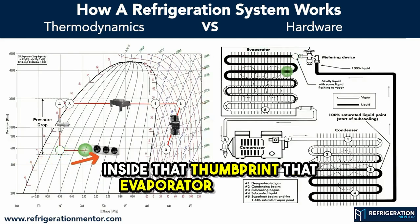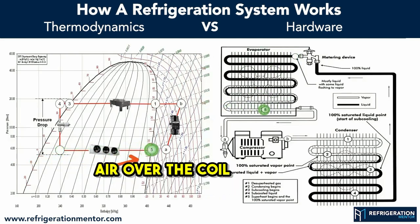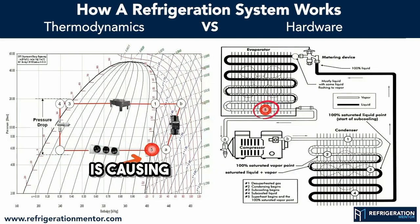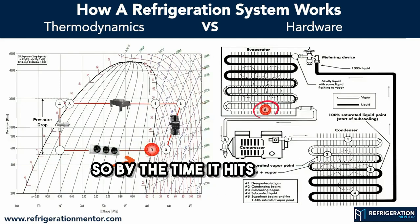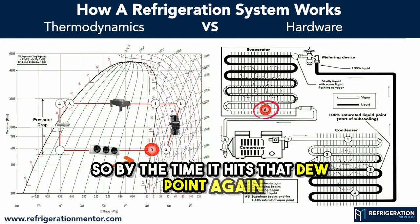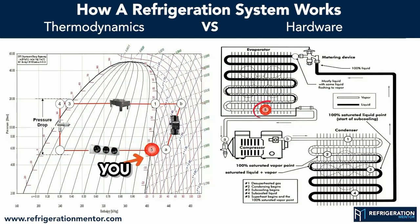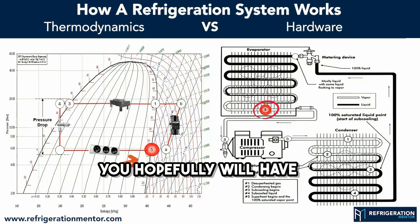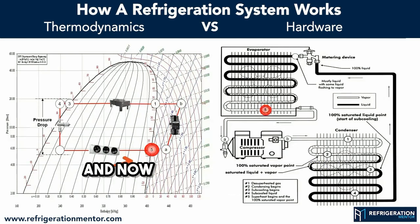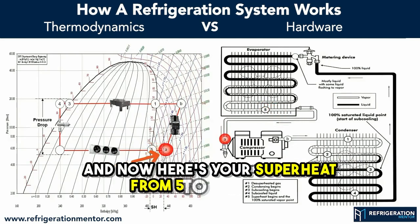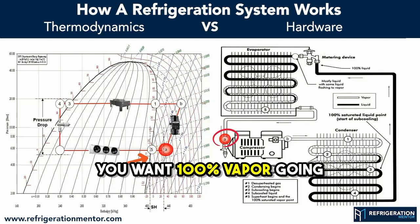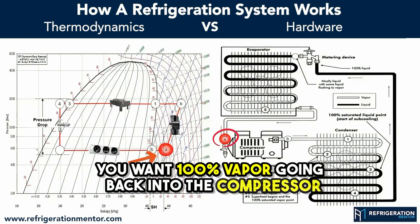That evaporator is blowing air over the coil, causing that refrigerant to boil. So by the time it hits that dew point again, you hopefully will have no liquid left. And now here's your superheat from 5 to A, because you want 100% vapor going back into the compressor.